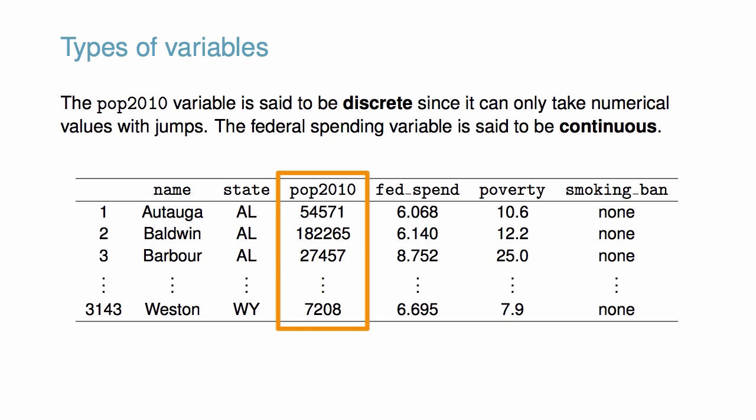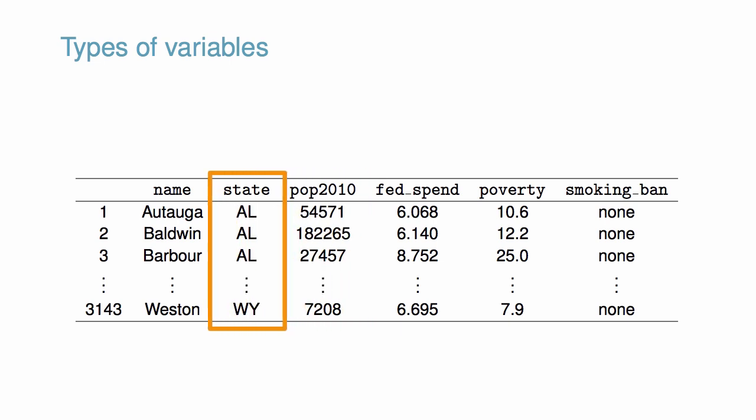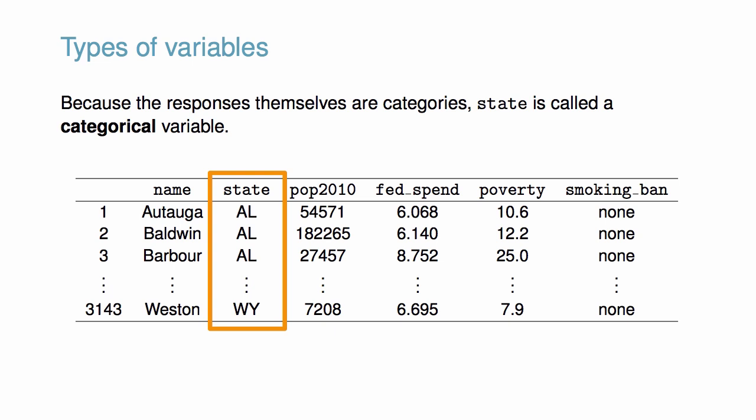On the other hand, the federal spending variable is said to be a continuous numerical variable. The variable state, for state name, can take up to 51 values after accounting for Washington, D.C. Because the responses themselves are categories, state is called a categorical variable. Notice, even if we numbered the states, they would still be categorical, because their average, sum, and difference would have no clear meaning.